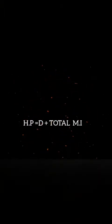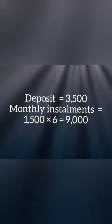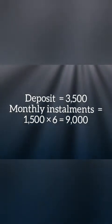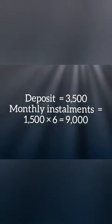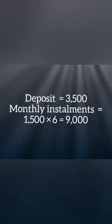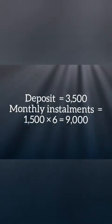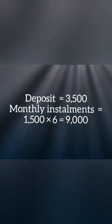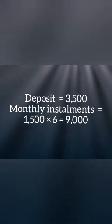To calculate the hire purchase price, we use the formula: hire purchase price equals deposit plus total monthly installments. The deposit was 3,500. The monthly installment was 1,500 for six months. So we calculate 1,500 times 6 to get 9,000.